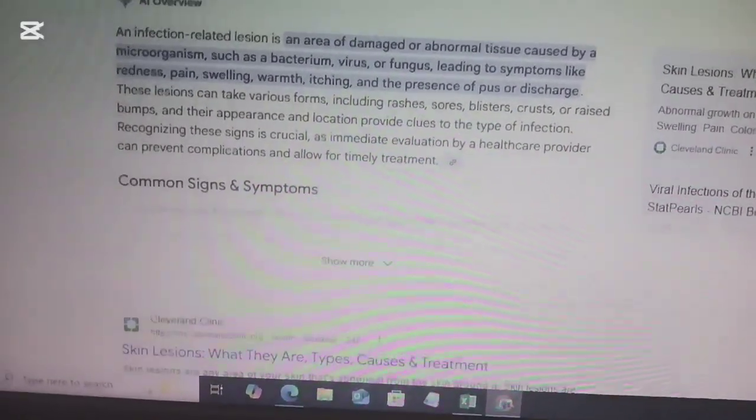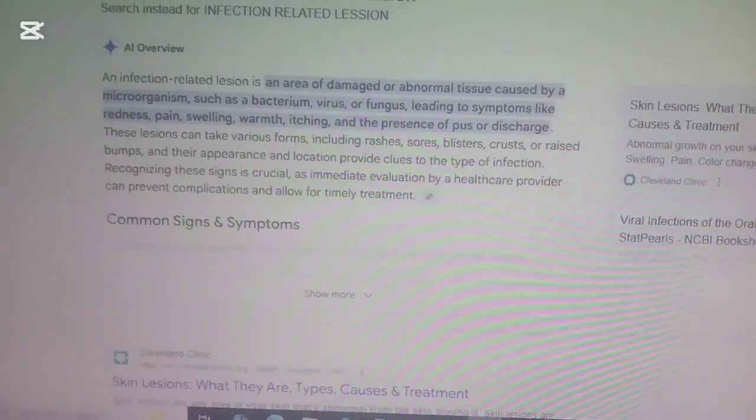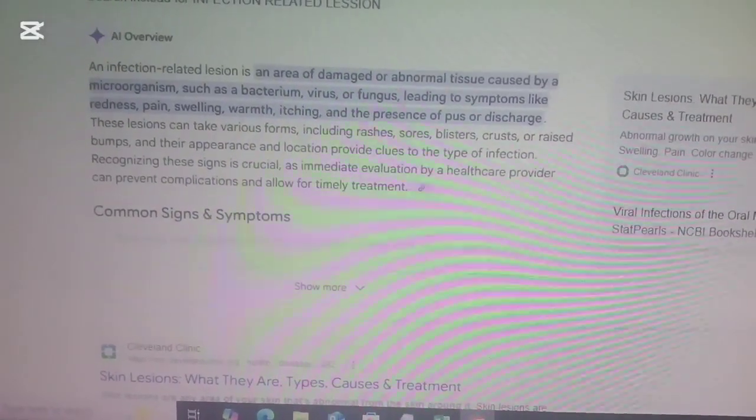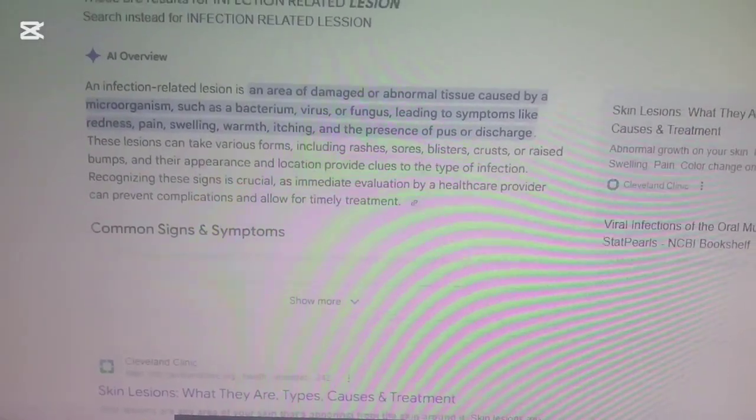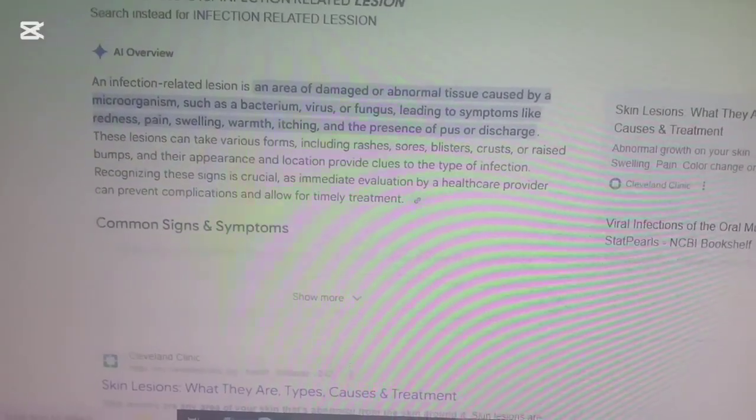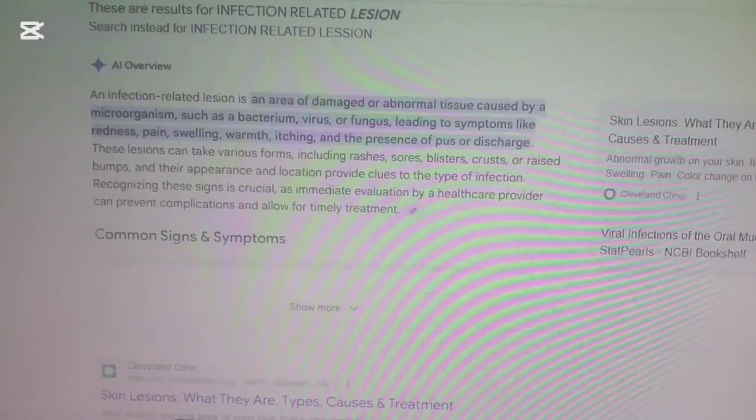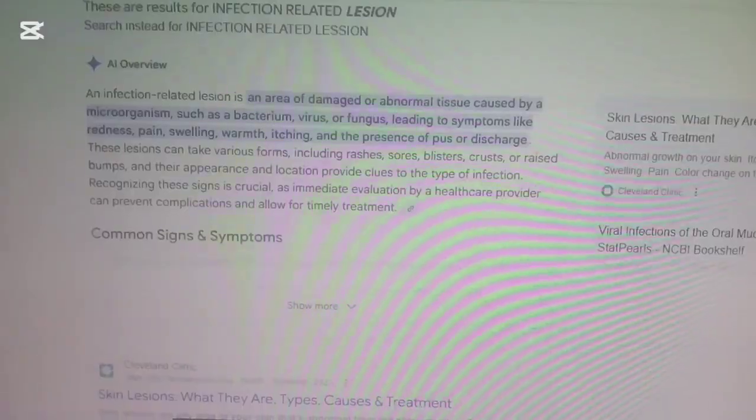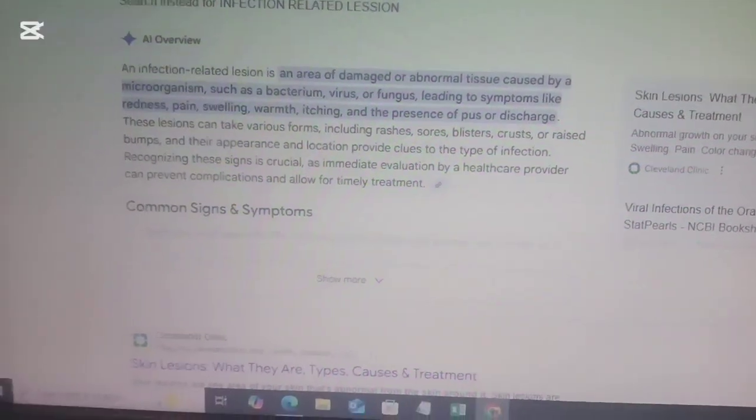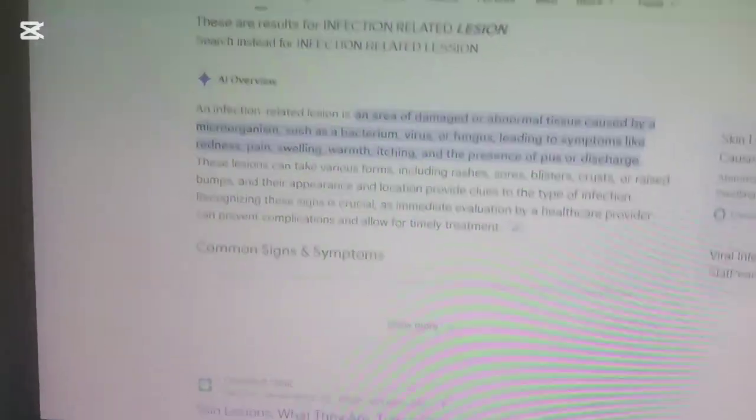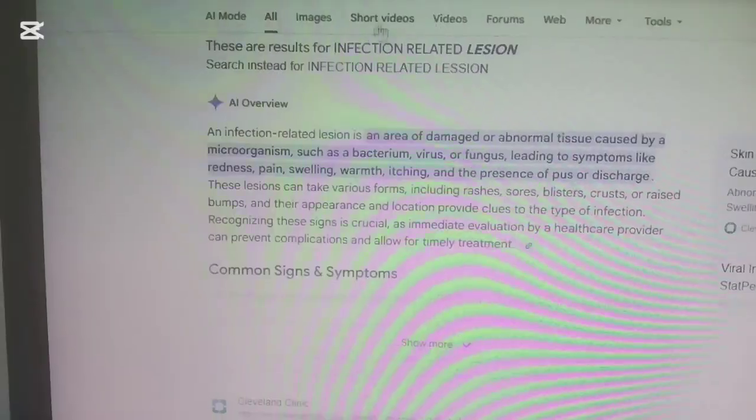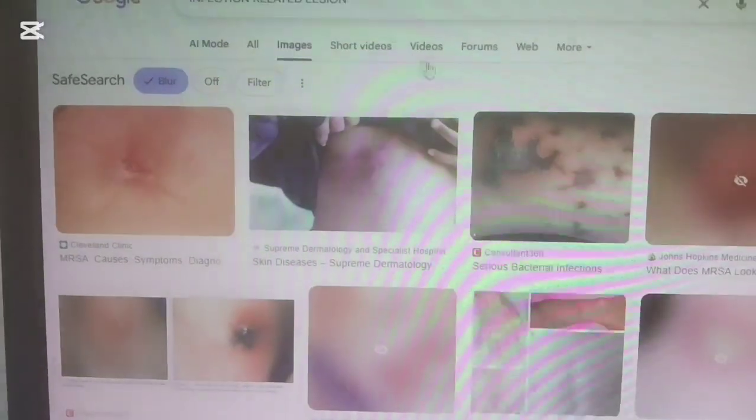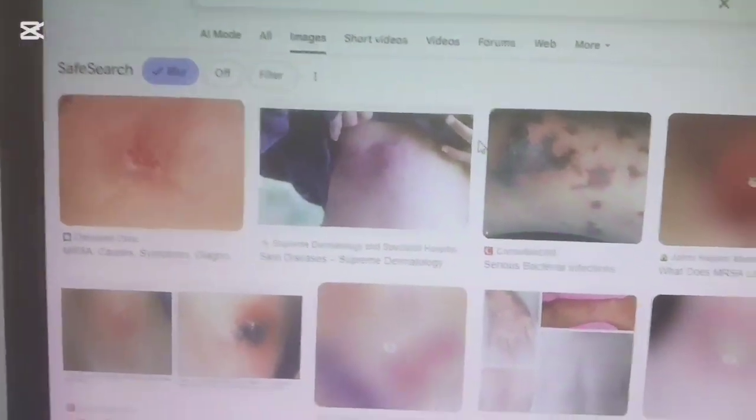The other one is infection-related lesions, which is an area of damage or abnormal tissue caused by a microorganism like bacterium or virus or fungus, leading to symptoms like redness, pain, swelling, warmth, itching, and presence of pus or discharge.